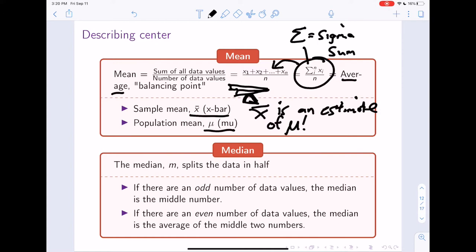The other statistic is the median, which we represent as this italicized m. It splits the data in half. How do we calculate the median? If there are an odd number of data values, the median is literally just the middle number. If there are an even number of data values, the median is the average of the middle two numbers.